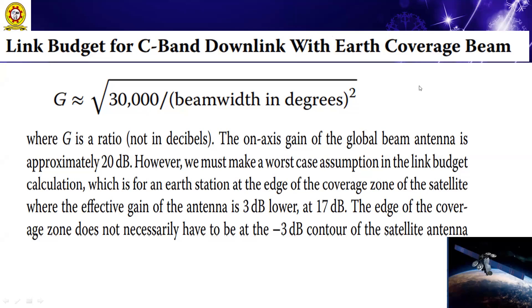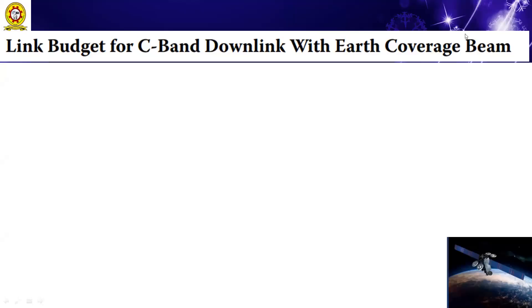Link budget for C-band downlink with air coverage beam. In this link budget we have the formula: gain equals 33,000 divided by 3dB bandwidth. In this session we are taking some steps regarding the link budget example from the previous session, where we formed an air link budget sheet and similarly a rain link budget sheet.